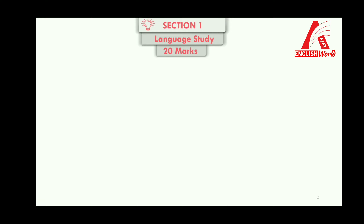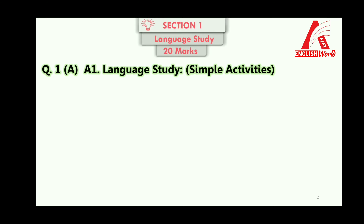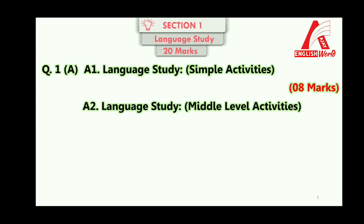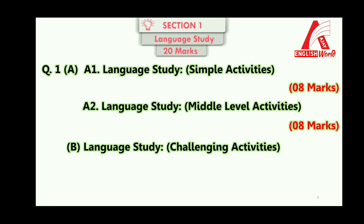Section number one — language study — is for 20 marks. It is divided into two parts: question number one A and question number one B. In question one A, there are two sub-sections: A1, which has simple activities for 8 marks, and A2, which has medium level activities for 8 marks. Question number one B is a set of challenging activities for 4 marks.